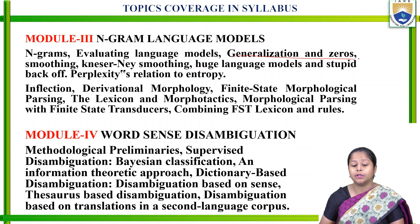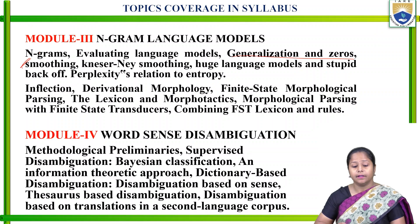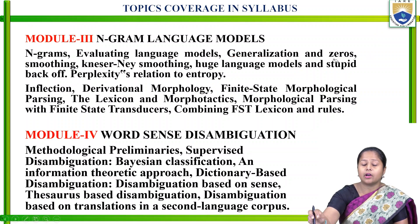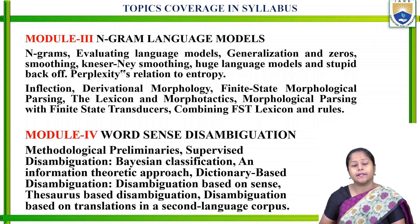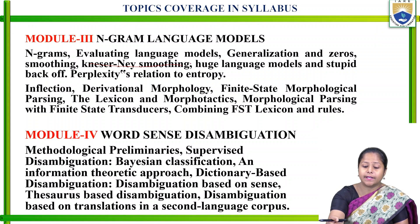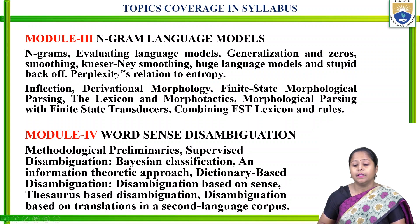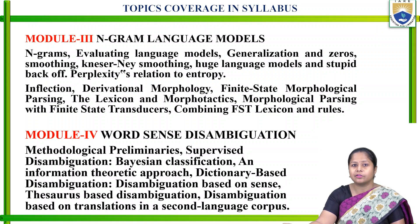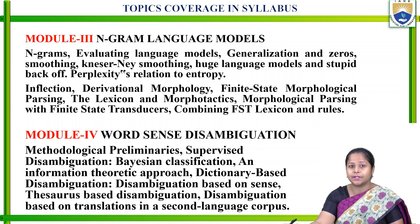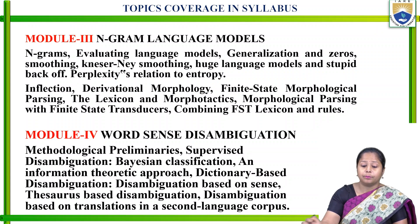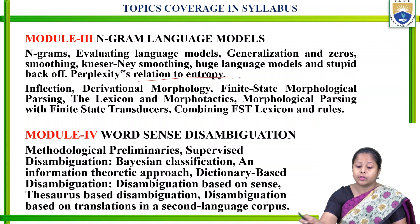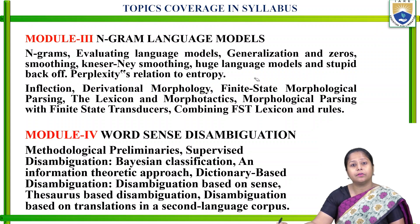Generalization and zeros will also be useful to understand for extracting those models. Smoothing is a technique we will discuss — models and algorithms based on words and sentences for pre-processing. Kneser-Ney smoothing is a method based on the smoothing technique. Huge language models are another type of language model. Stupid backoff is also based on those models, using a backoff process to extract words from sentences. Perplexity in relation to entropy is a formula to extract words from sentences.